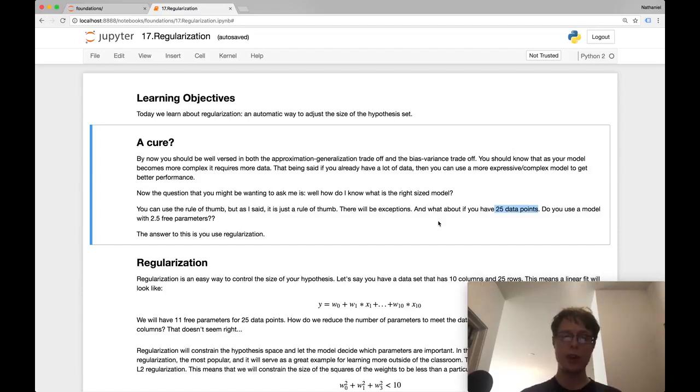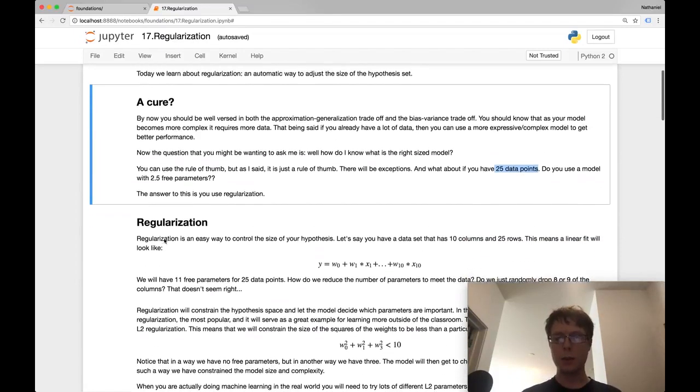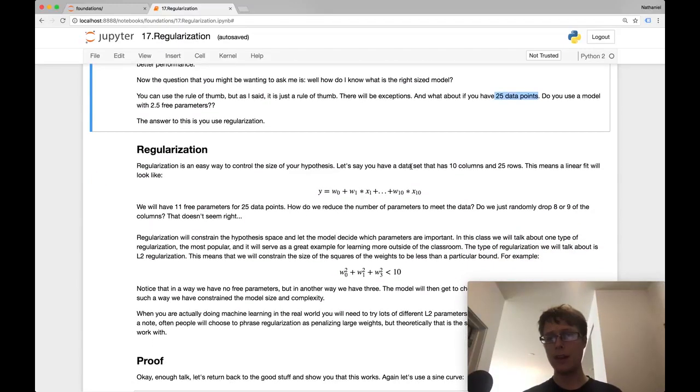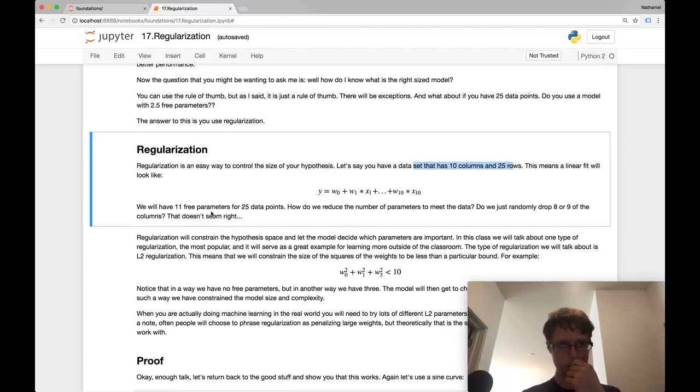So how do you choose? We use something called regularization. Regularization is a programmatic way to choose the right size of your model. For example, for a linear model, let's say we have 10 columns and 25 rows. A linear fit would look something like W0 plus W1 all the way up to W10.